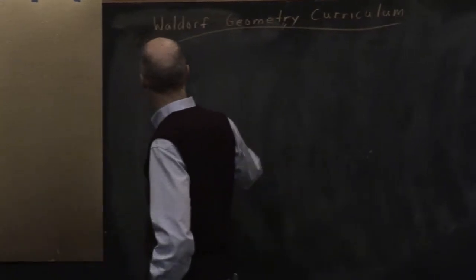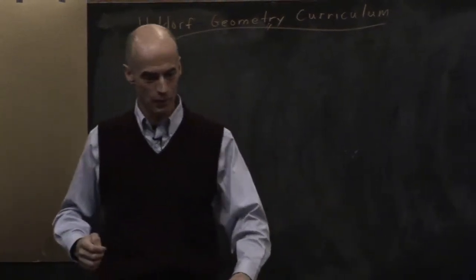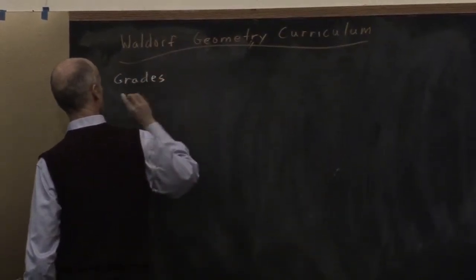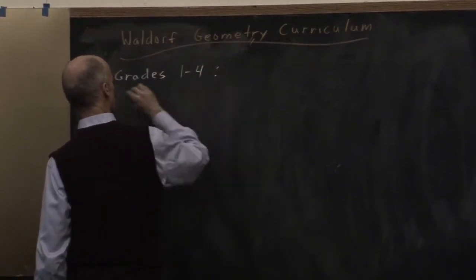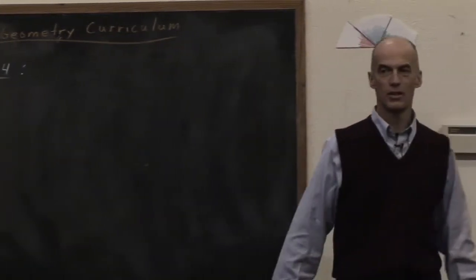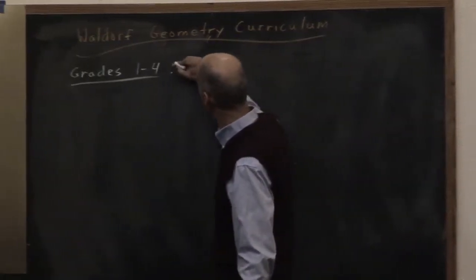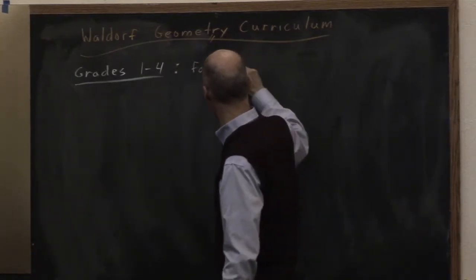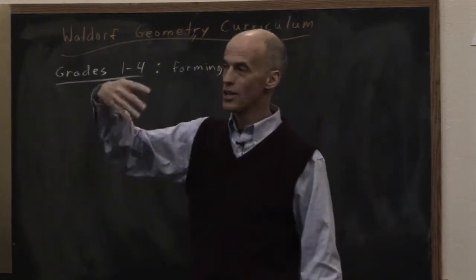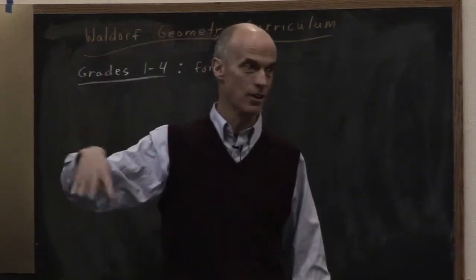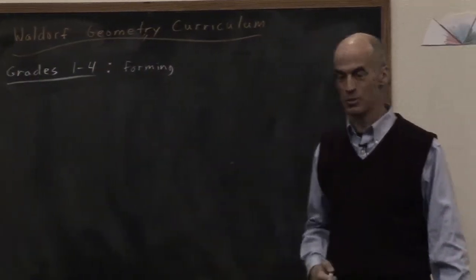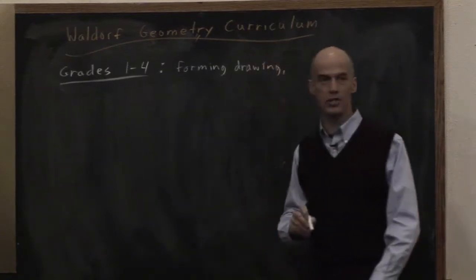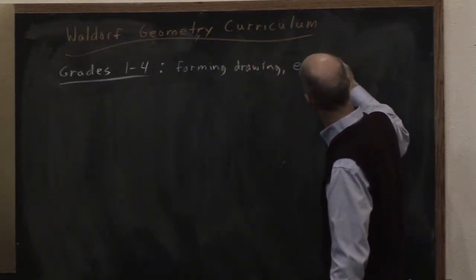The Waldorf Geometry Curriculum, I would first point out, grades 1 through 4, what are they doing that involves geometry? That's called form drawing. What I just suggested would be curved and the straight line. And of course, out of that comes the children learning how to write the letters. They're learning that writing actually comes out of that. So we have form drawing. And I'd say the other aspect of geometry is through movement, but through eurythmy.